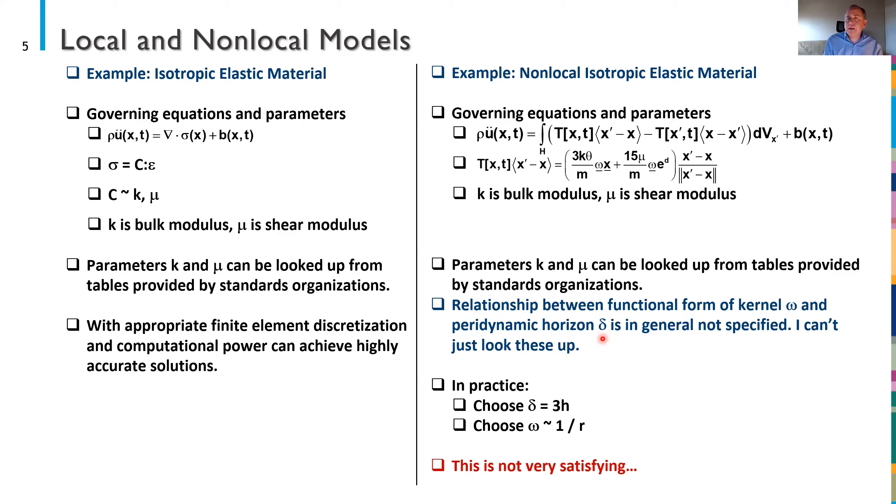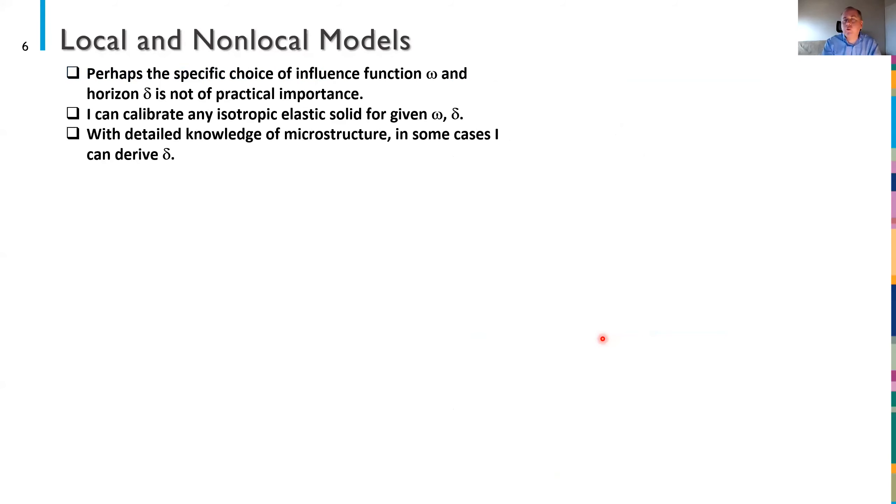Now in practice what happens if you're not really sure what to use you can do what everyone else does. I'll make δ to be some integer multiple of the mesh spacing. I'll pick an ω that looks like a one over r function. I'll simulate with this. In practice I'll probably get pretty good looking results. But at some level it's not as satisfying as I would like it to be.